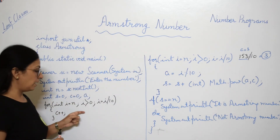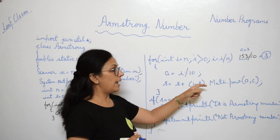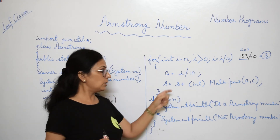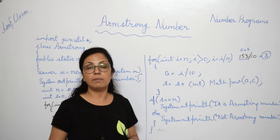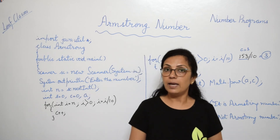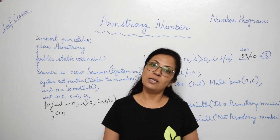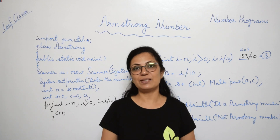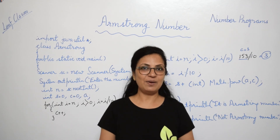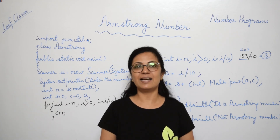To summarize: we input the number, count the number of digits, extract each digit from right to left, calculate each digit's power according to the digit count, add them to the sum variable, and finally compare the sum with the original number to determine if it is an Armstrong number. If you haven't subscribed yet, please subscribe and press the bell icon. You can also join our Telegram channel — the link is in the description box. Keep practicing, keep working hard — God bless you, children!